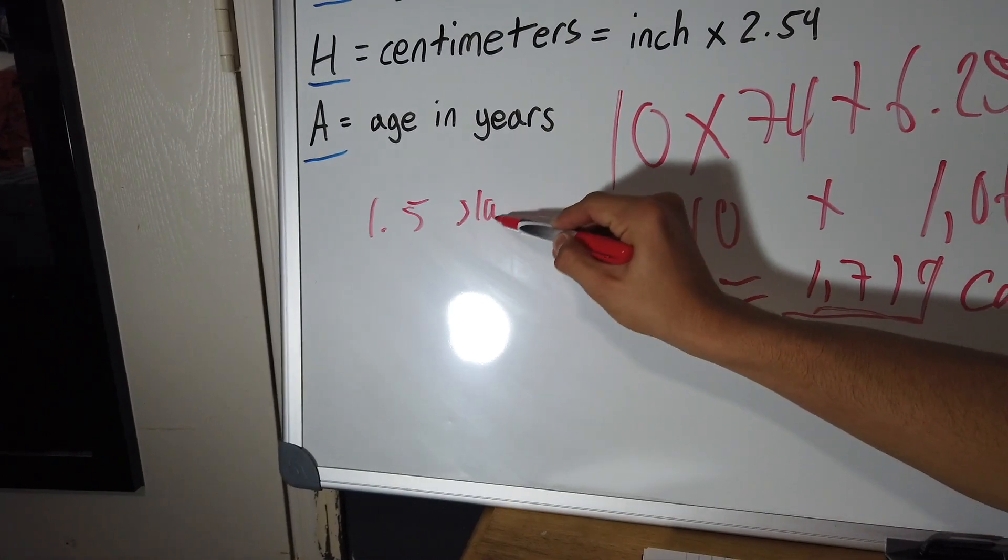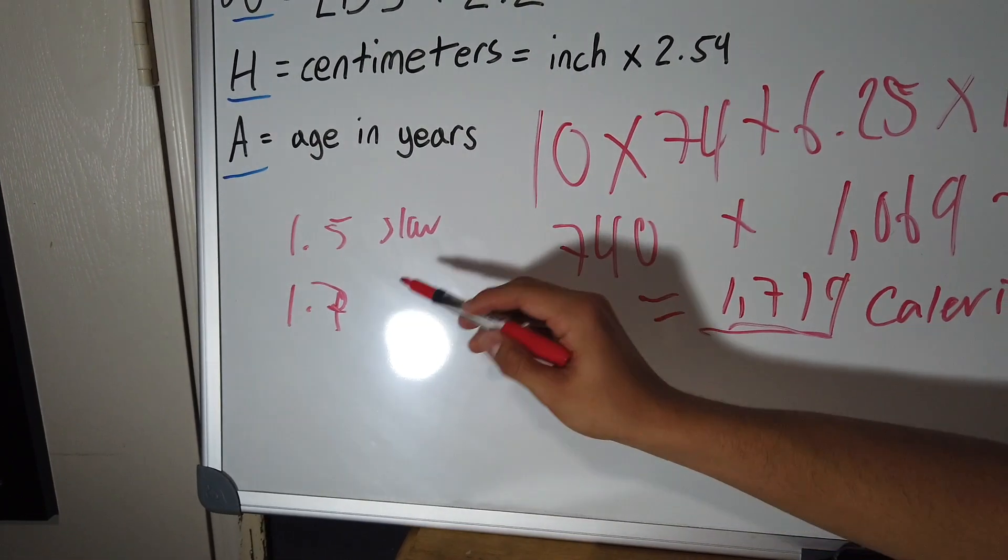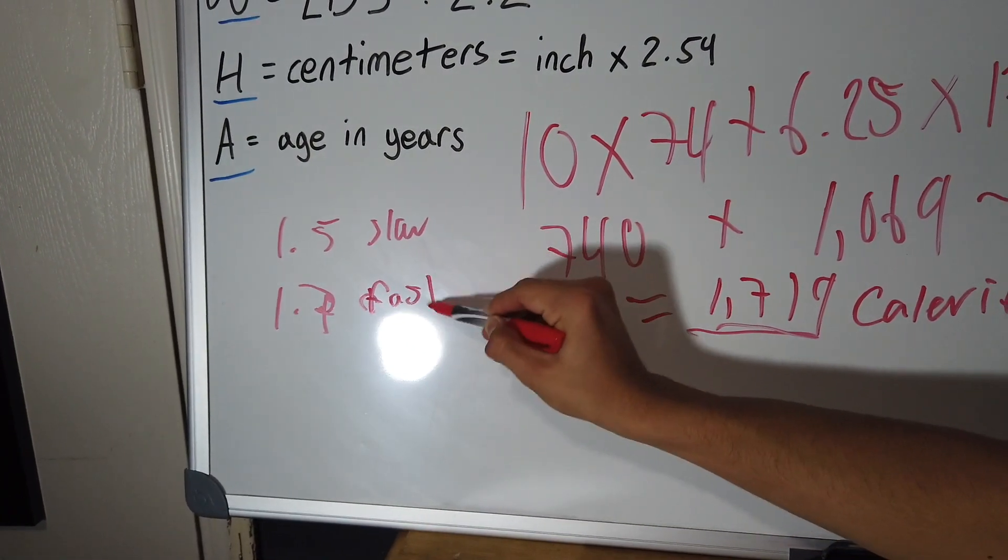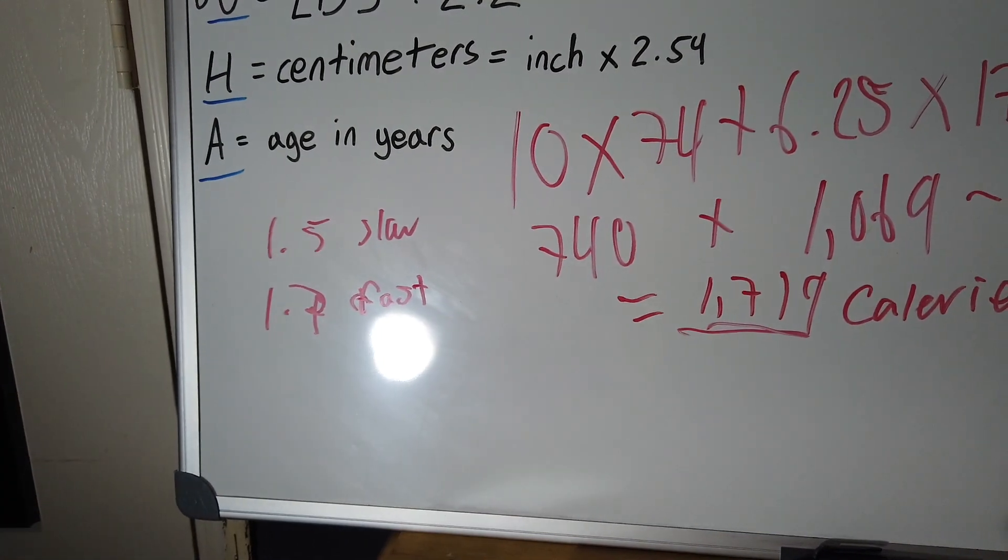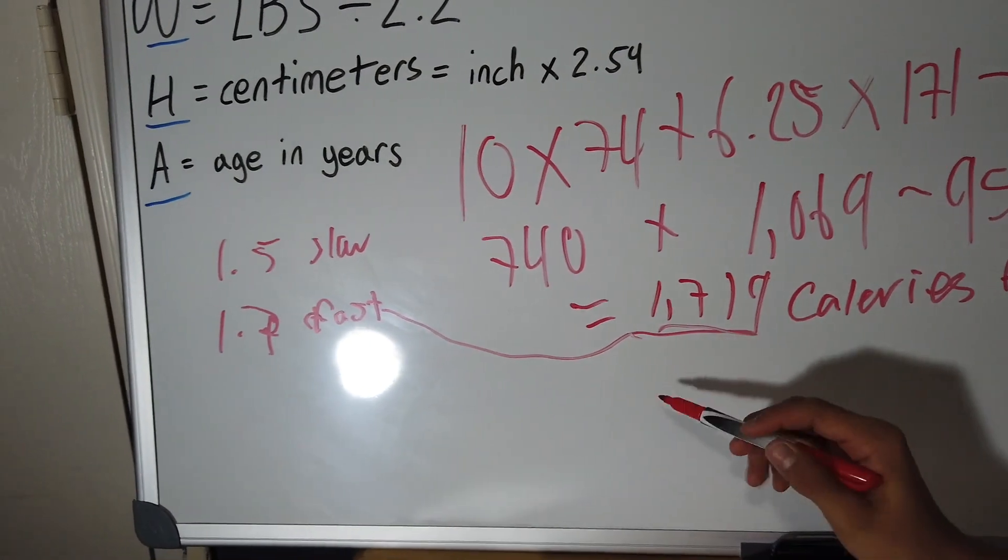Or if you have a fast metabolism, you want to multiply by 1.7, which is fast. So since I have a fast metabolism, I'm gonna multiply this number by 1.7.